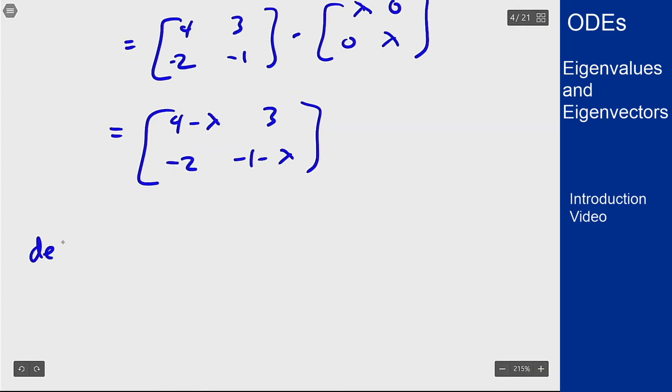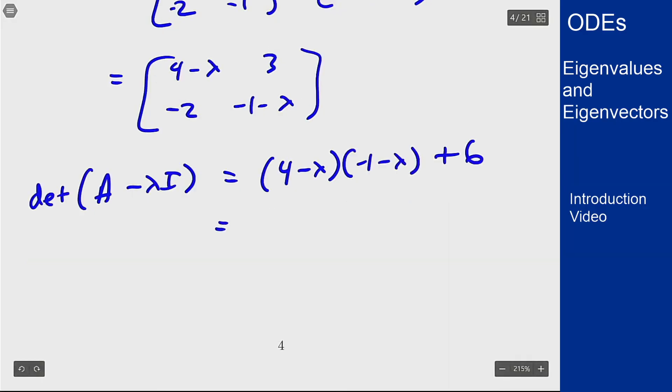The determinant of A minus lambda I will equal (4 minus lambda)(negative 1 minus lambda) and then minus 3 times minus 2, or plus 6. Expanding this out I get negative 4, plus lambda, minus 4 lambda, and plus lambda squared, and plus 6, which is lambda squared minus 3 lambda plus 2, which factors as (lambda minus 1)(lambda minus 2).